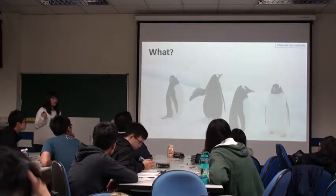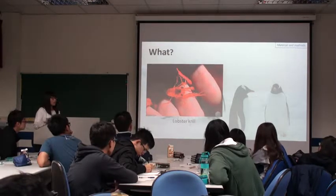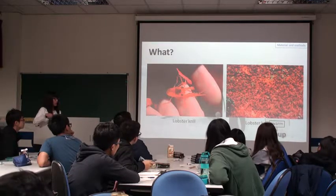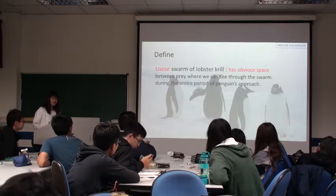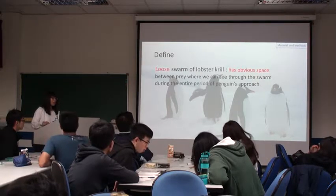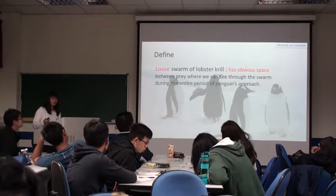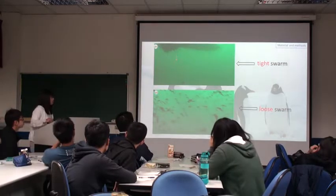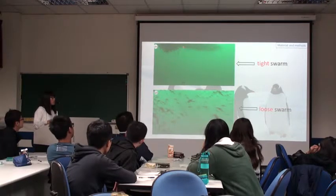What do we want to know? We want to observe the behaviour between the penguin and its prey. This is krill — it is the main food that the penguin eats. And this is a krill swarm; the word 'swarm' means group. To study about animal behaviour, we need to have a clear definition of what each movement means. Here, we define a loose swarm of krill as one where there is obvious space between krill, so that we can see through the swarm during the entire period of the penguin's approach. A tight swarm is the opposite. As you can see in this picture, this is a tight swarm and this is a loose swarm — you can see there is no obvious space to see through the tight krill swarm.